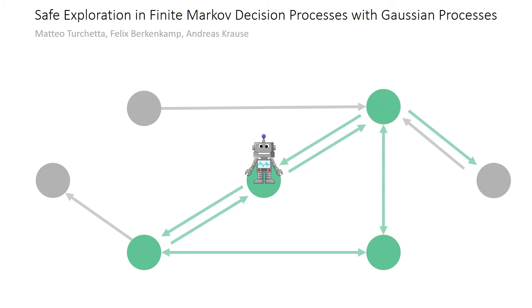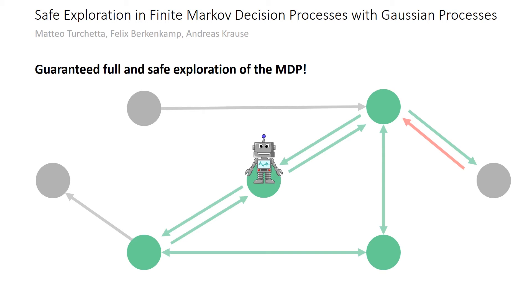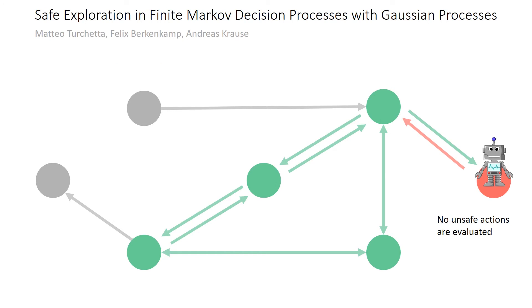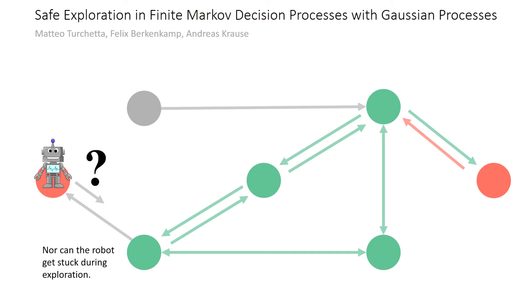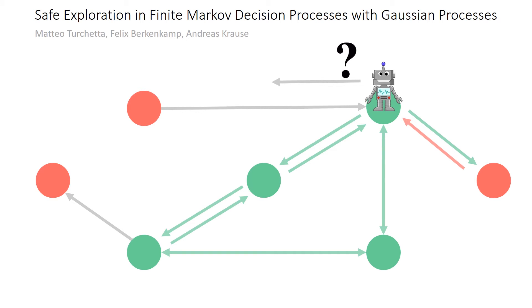Our algorithm guarantees with high probability that the full safely reachable region of the MDP is explored. Moreover, no unsafe state transitions are evaluated since they might harm the robot or its environment. This includes ensuring that the robot cannot get stuck in states with no safe actions available, or attempt to visit states that are not reachable in a safe way.